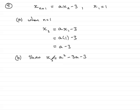All we've got to do is let n equal 2 in the recurrence relationship. So when n equals 2, we would have x_3, the third term in the sequence, and that's going to equal a times x_2, so that's the second term in the sequence, minus 3.